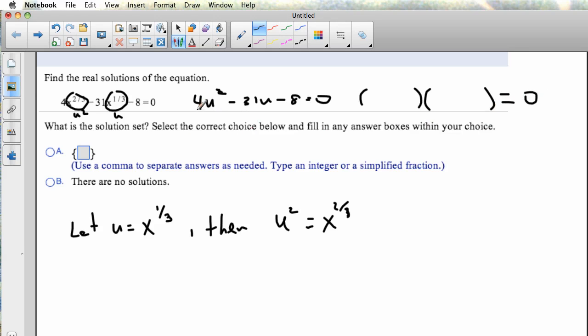And the 4 and the 8 here multiply together to be negative 32. So two numbers whose product is negative 32 but have a sum of negative 31, which would just be negative 32 and 1. So if I put a 4u here and a minus 8 here, then my outer in FOIL will be negative 32u. And I can put a plus 1 and a u here, and the inner will be positive 1. So I have my outer plus inner equals negative 31u.